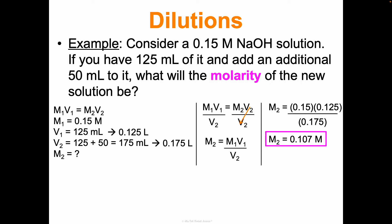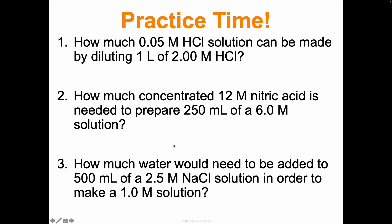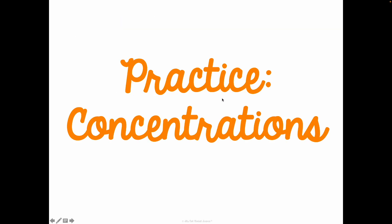Reflect: does this make sense? You added more water and the concentration went down - yes, that makes sense. If you start with a higher concentration and add water, it dilutes and you should get a lower concentration. That's what we mean by RADAR and reflecting at the end. You can also double-check by plugging your M1 times V1 and confirming it equals M2 times V2. Here are some more practice problems we'll go over in class, and then we'll do a whole practice worksheet on concentrations.